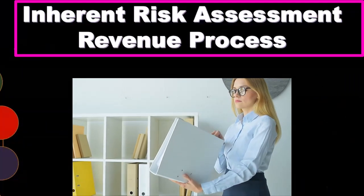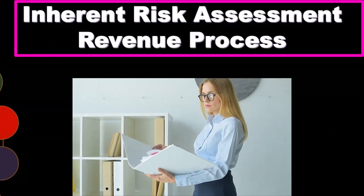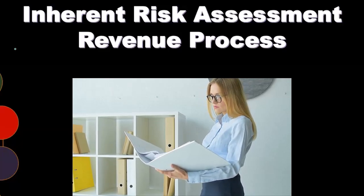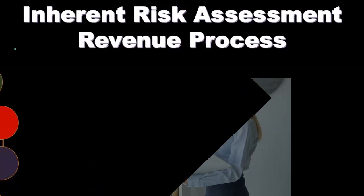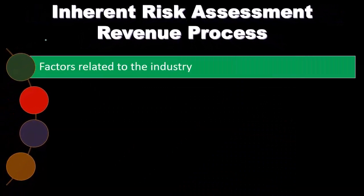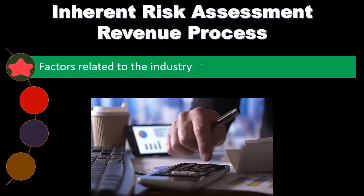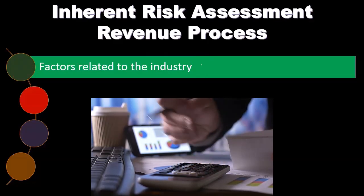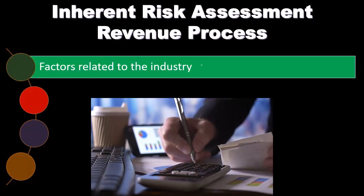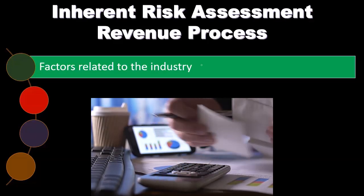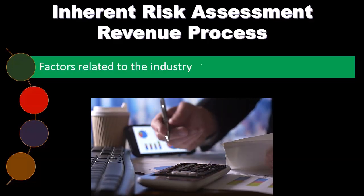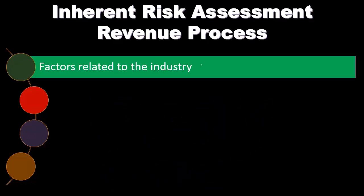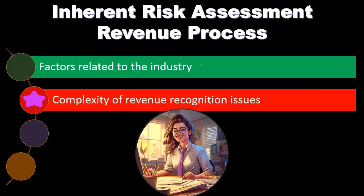When we consider the inherent risk, we want to think about what the inherent risk process is so we can assess the effectiveness of the internal controls in mitigating that risk, and also determine how much substantive testing we need to do. With regards to the revenue recognition process, we have factors related to the industry — what type of industry they are in. Some industries are just more inherently risky, such as those with a high degree of non-payment of receivables or a high degree of bad debt.